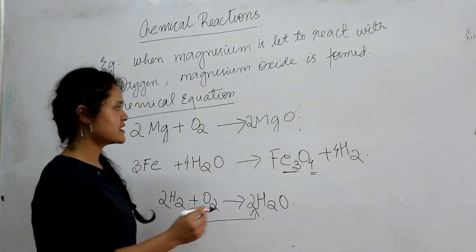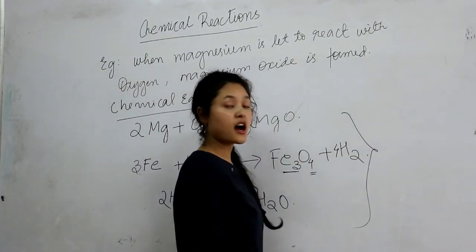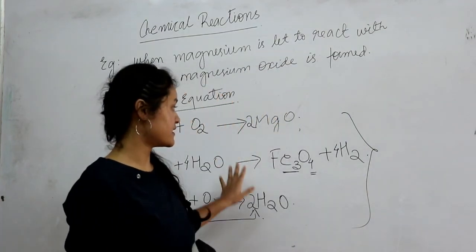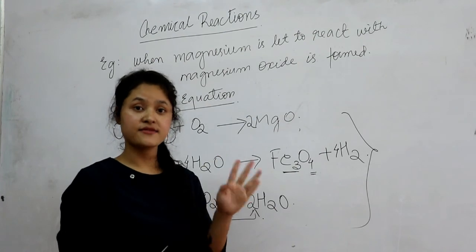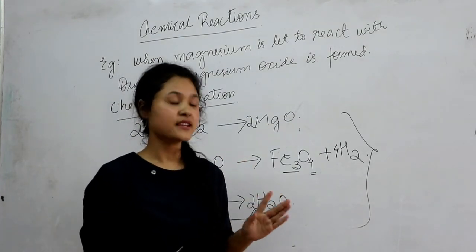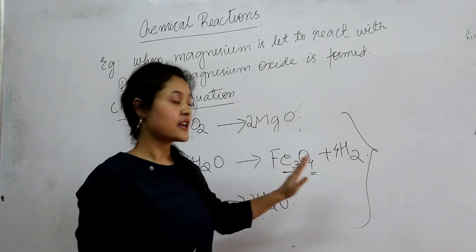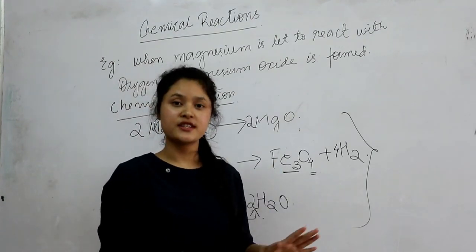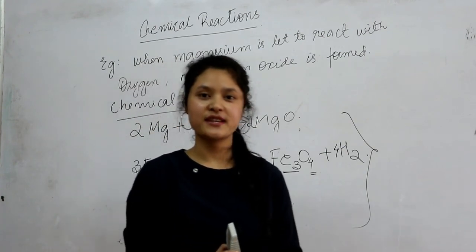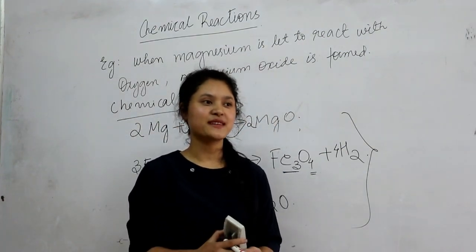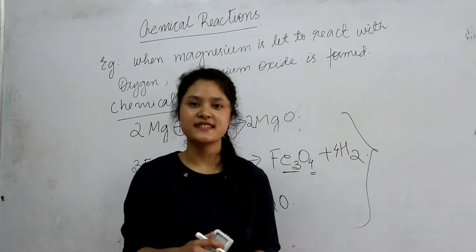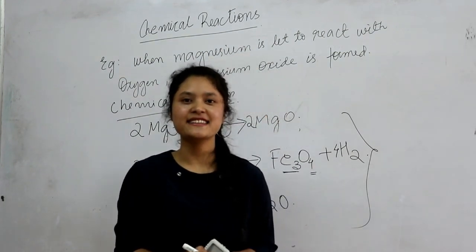These are just a few examples of how to balance a chemical equation. If you use this method — balancing first the element with the highest number of atoms and then doing the rest — you will be able to balance all chemical equations. I'll stop here now, and I hope we meet again. Until that time, stay safe and stay healthy. Thank you.